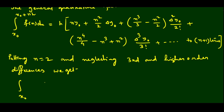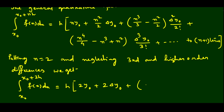The actual limit is x₀ to x₀ + n·h. So in place of n if we put 2, it will be x₀ to x₀ + 2h of f(x) dx. The right-hand side becomes h into: 2y₀ plus n²/2, so 2² /2 = 2, giving 2·Δy₀, then n³/3 = 8/3 minus n²/2 = 2, giving (8/3 − 2)·Δ²y₀ / 2!. Since we are neglecting other terms, from delta-cube onward those terms will not come.